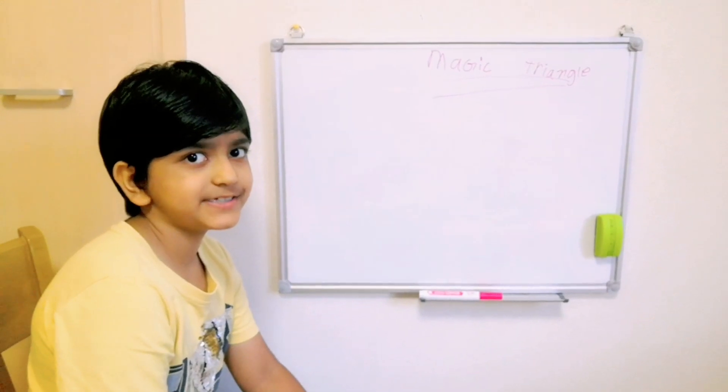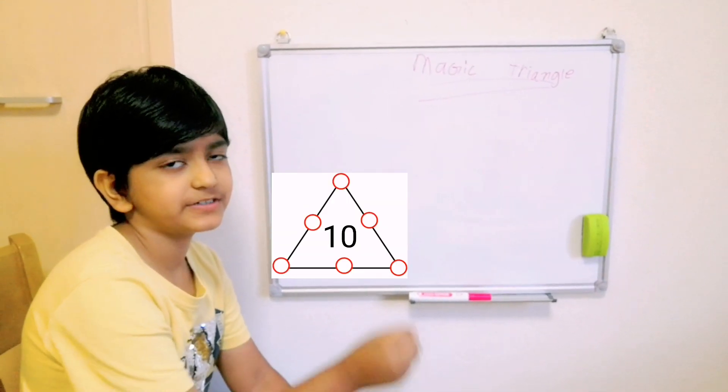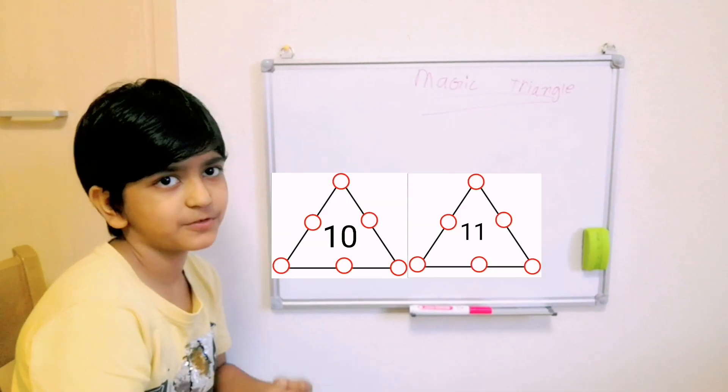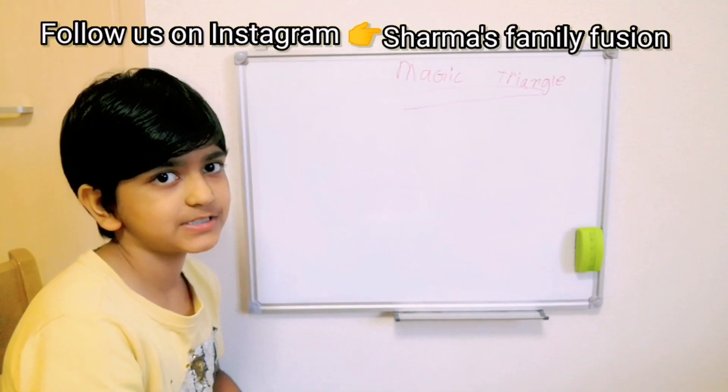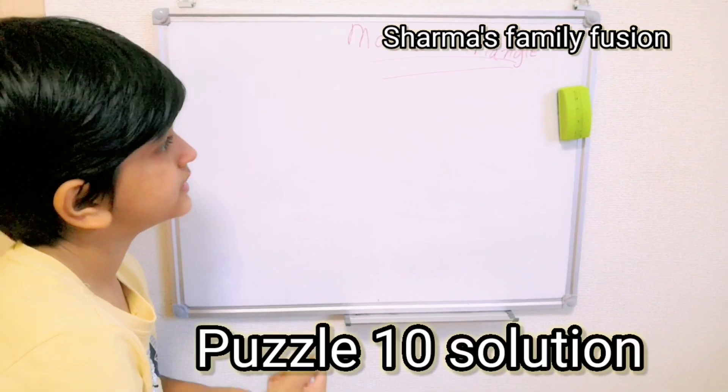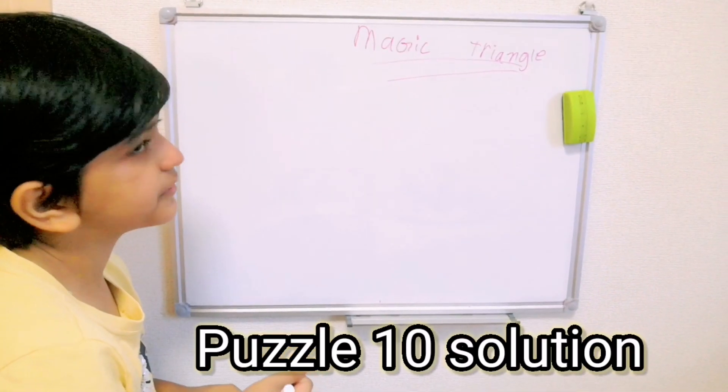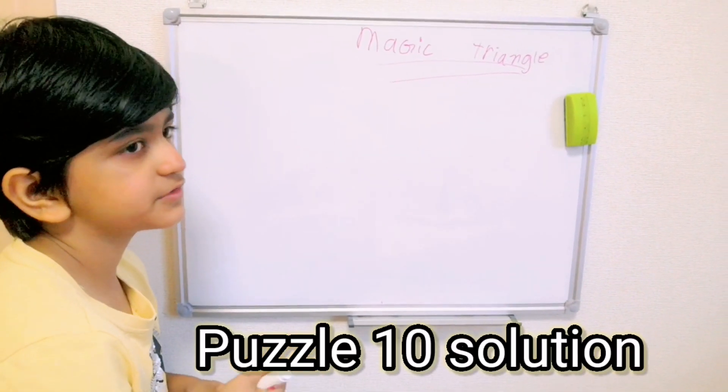I'm going to teach you two puzzles. One is for 10 and one is for 11. So first I'm going to teach you puzzle number 10 triangle. So I'm making a triangle and putting circles between them.